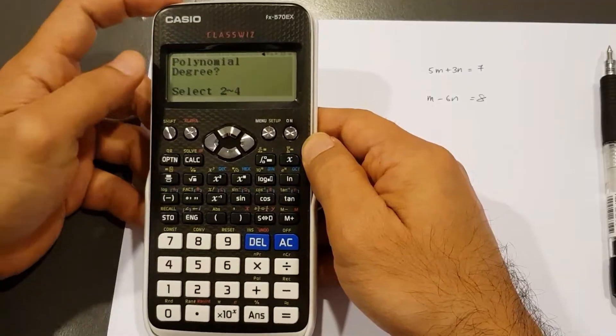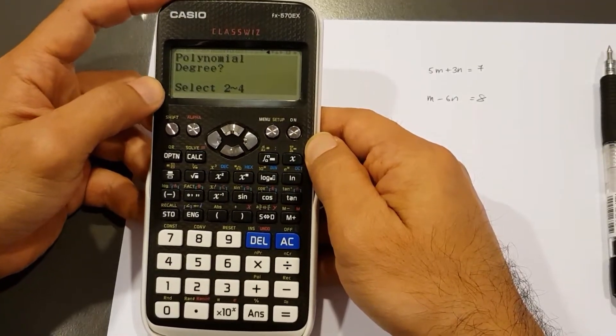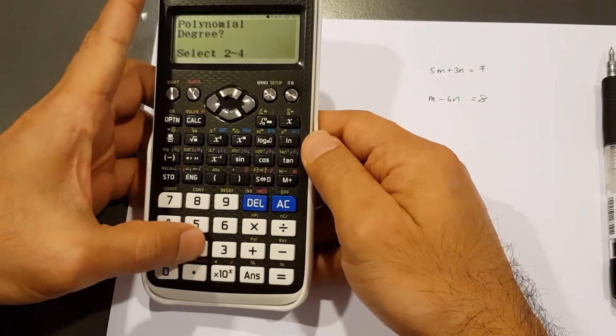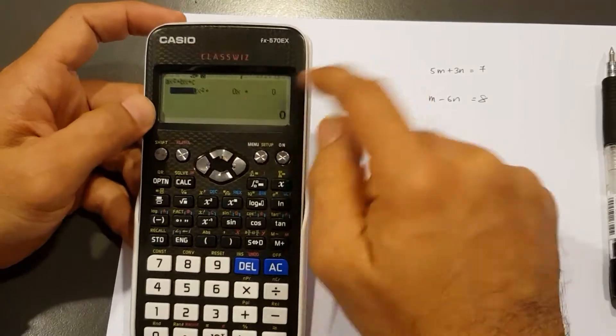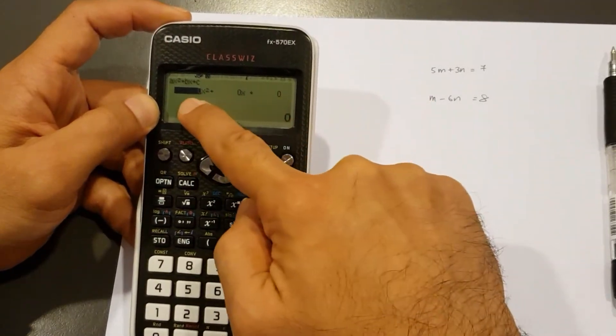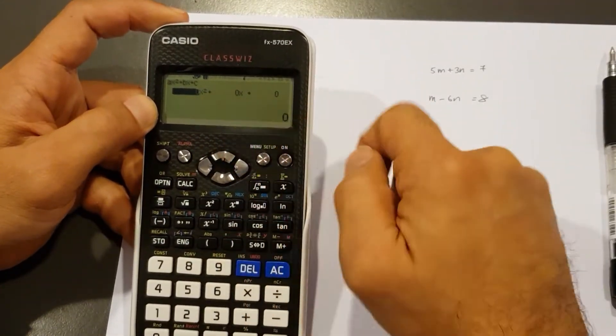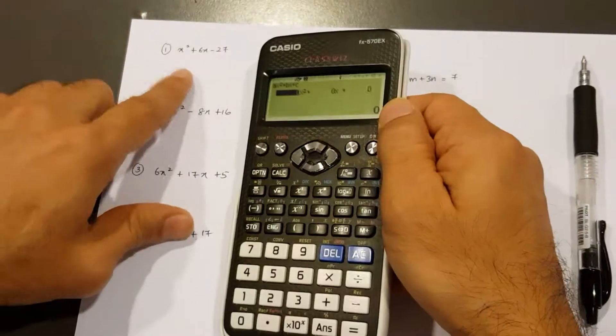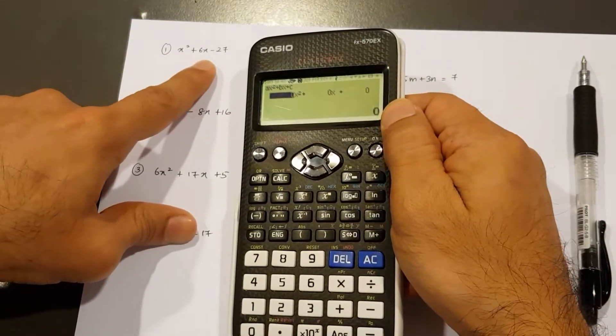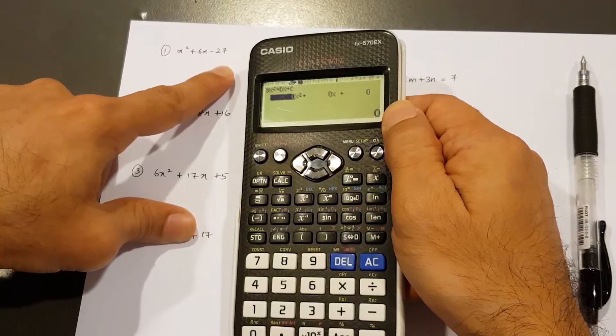So number two, the degree of course is two for quadratic factorization. So that's two. Okay. Then those are the empty spaces we have to fill in. So first one, A is one, B six, and C is negative 27.